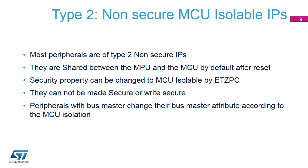Most peripherals are of Type 2, non-secure IPs. They are shared between the MPU and the MCU by default after reset. The security property can be changed to MCU isolable by ETZPC. They cannot be made secure or write secure. Peripherals with a busmaster change their busmaster attribute according to the MCU isolation.